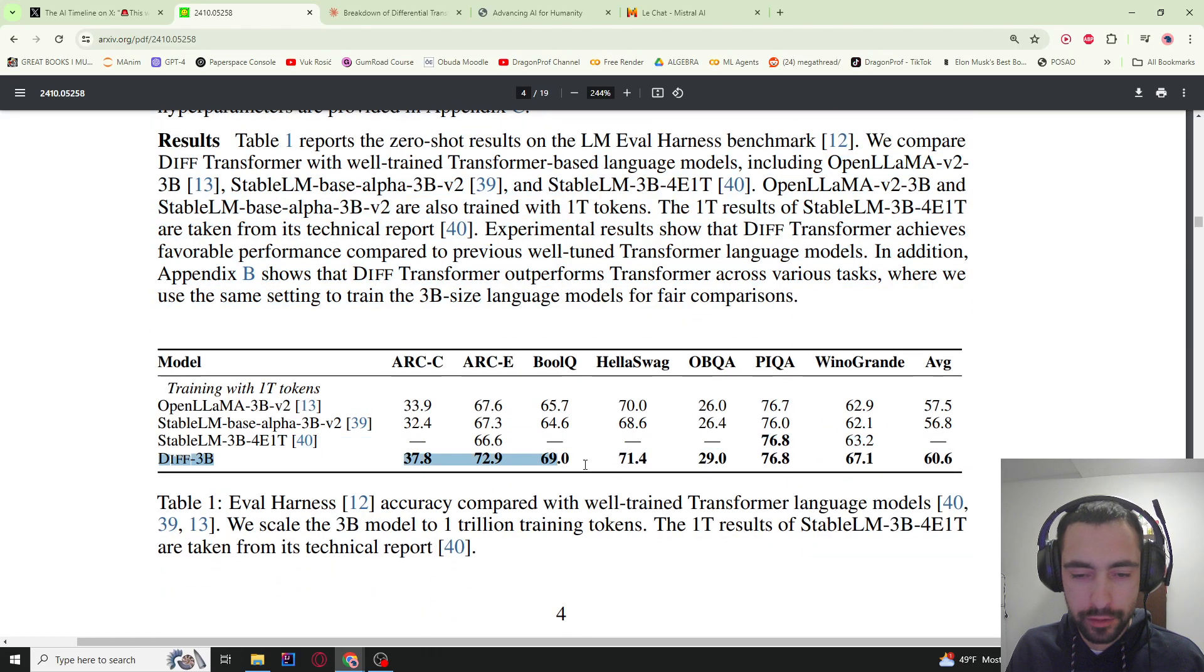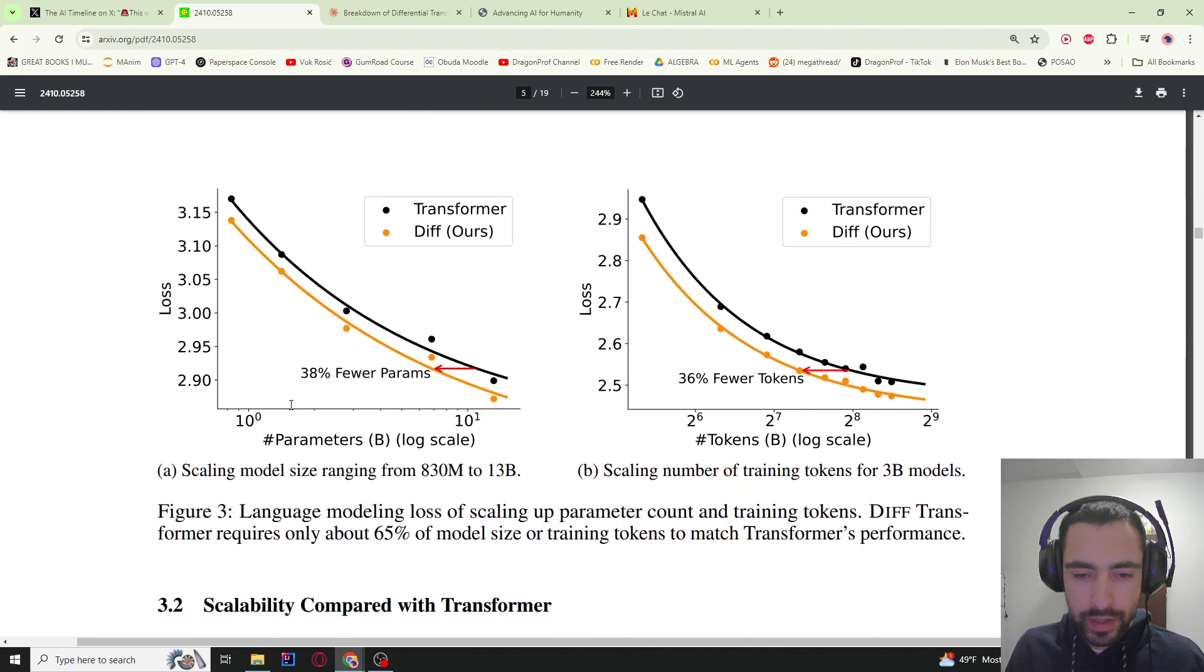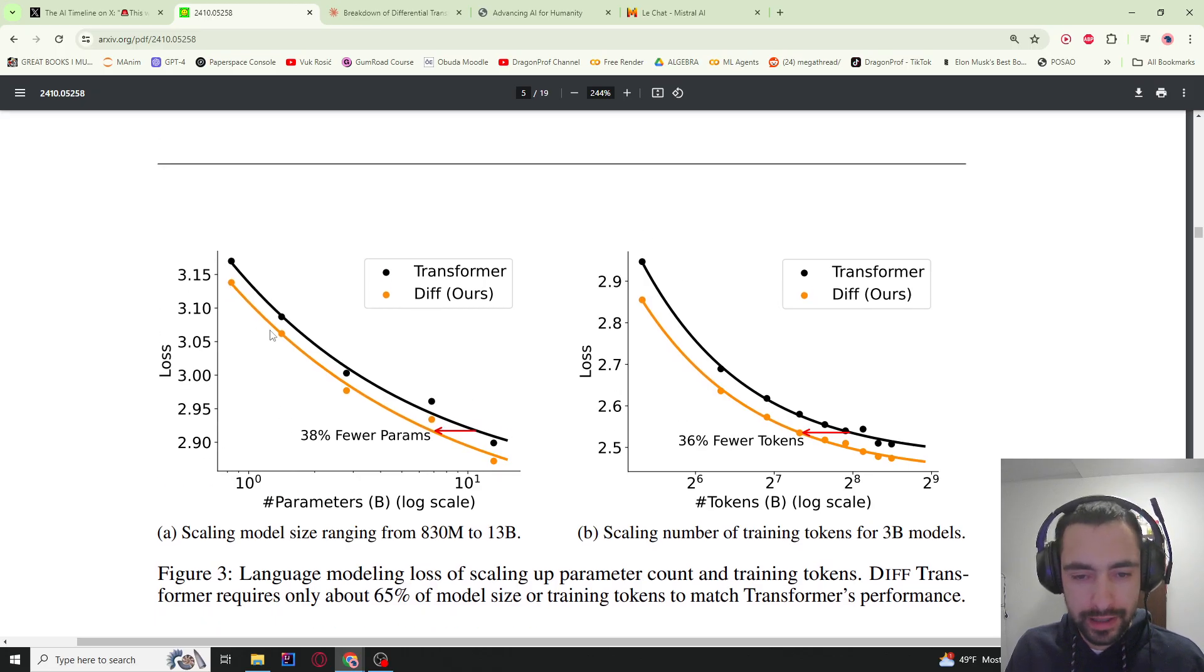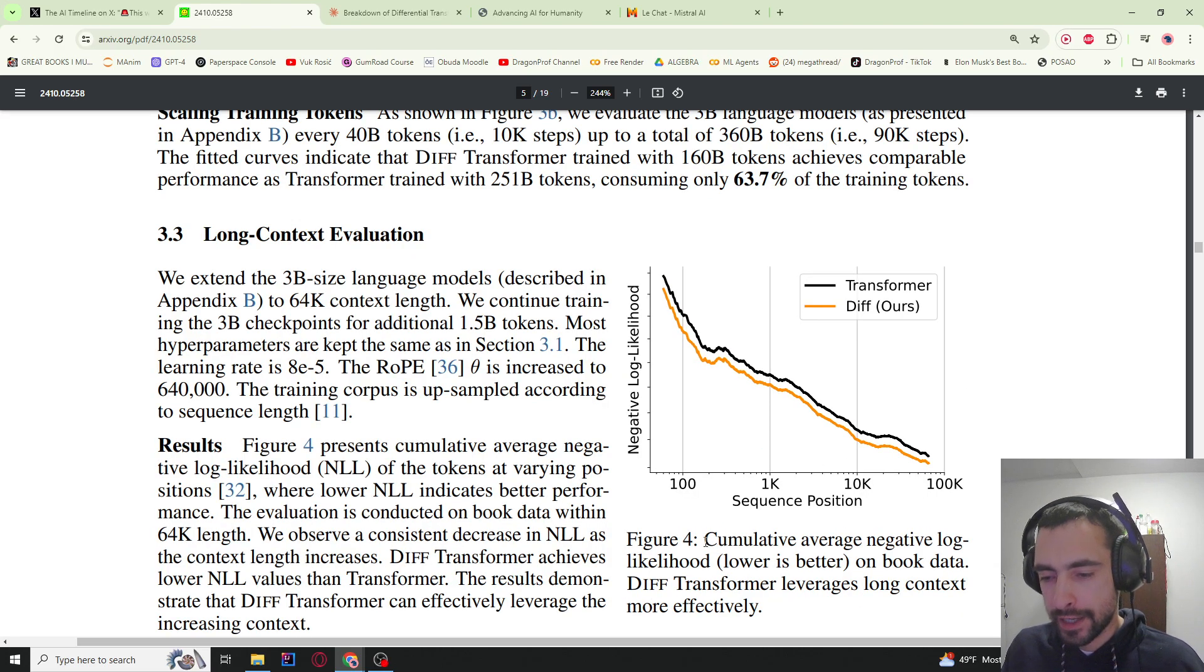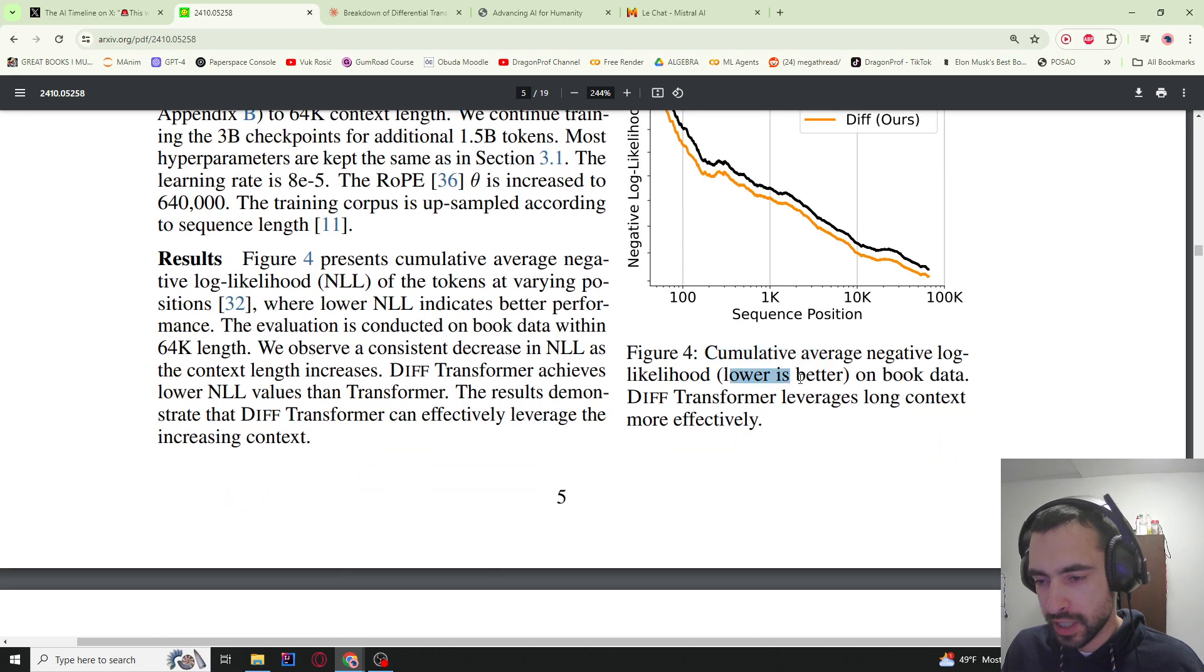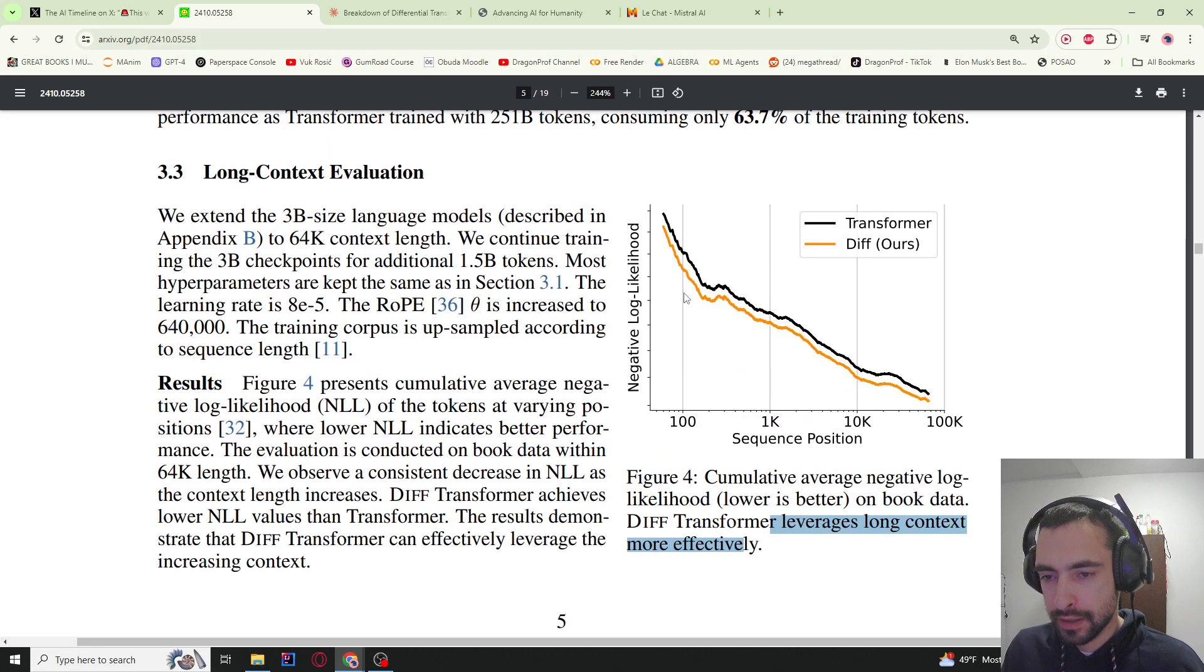They explain in more detail how exactly they're doing these experiments. We see that differential transformers are winning in comparison to these other transformers. We can see down that it also learns faster. We have number of parameters from 830 million to 13 billion and the loss is getting reduced faster. So you need 38% fewer parameters and you need 36% fewer training tokens. Here we can see cumulative average negative log likelihood—lower is better—on book data. Differential transformers leverage long context more effectively, so you see here that it becomes lower faster.